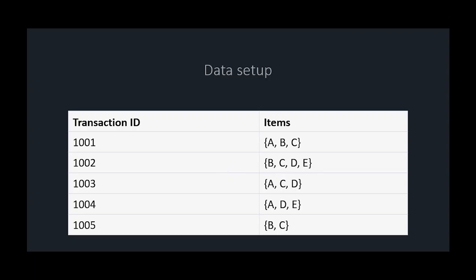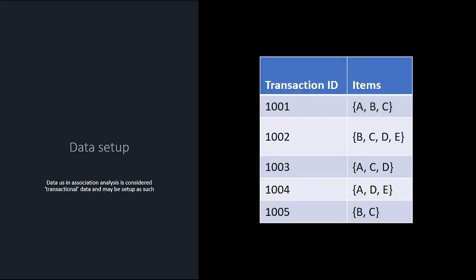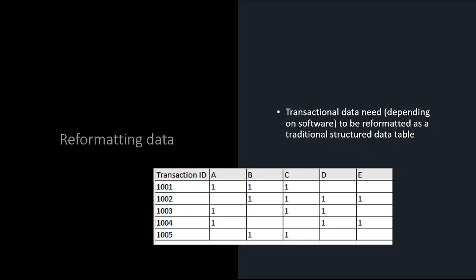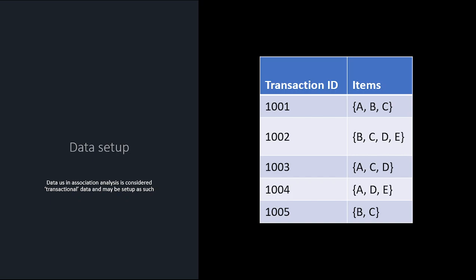The way this is set up, you can't analyze it directly, so you have to restructure it — this is where the data wrangling skills come in. So this is the same data, I just put it in Excel and formatted it. This is how it needs to look for association analysis.